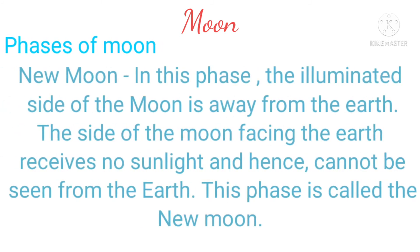Let us know why the new moon occurs. In this phase, the illuminated side of the moon is always away from the earth. The side of the moon facing the earth receives no sunlight and hence cannot be seen from the earth. This phase is called the new moon.